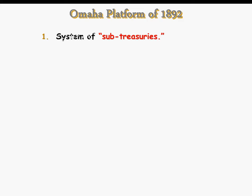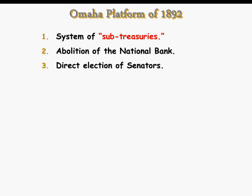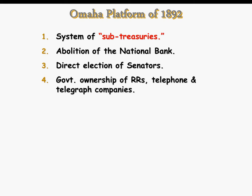The Omaha platform consisted of the agenda, the things that the Populist Party was pursuing. They still wanted the sub-treasury idea, where they could borrow money against crops being stored in silos. They wanted to abolish the national bank. They wanted senators to be elected directly by the people.